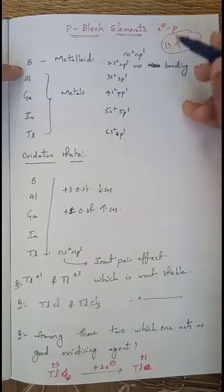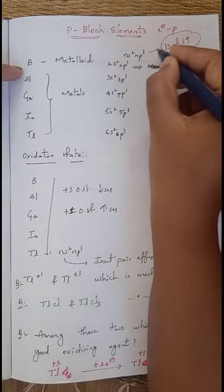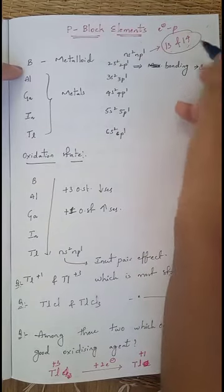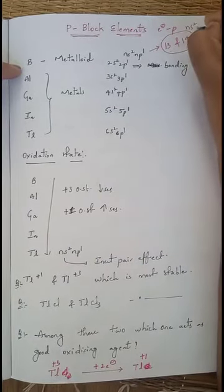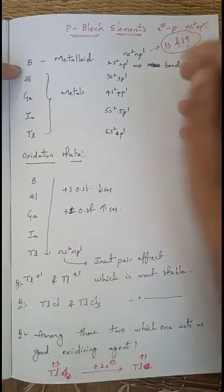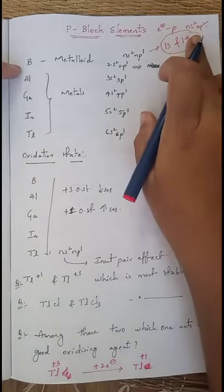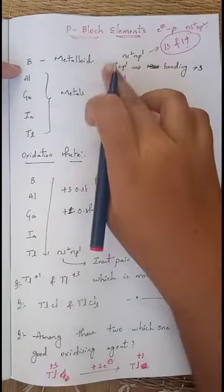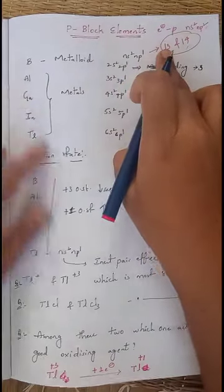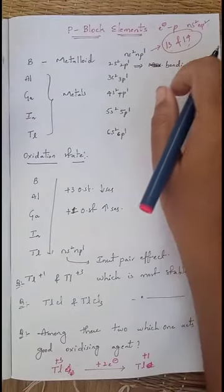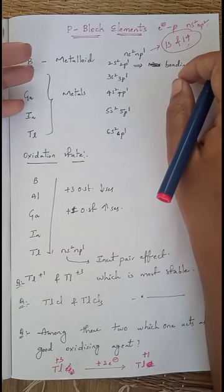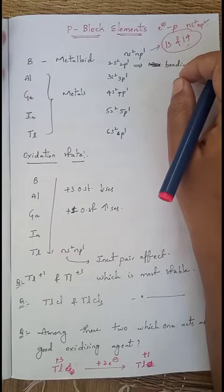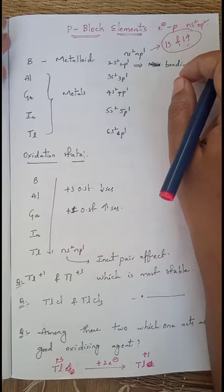In the 13th group, the outermost electronic configuration is ns² np¹. For 14th group elements it is ns² np². That is the outermost configuration for 14th group, and ns² np¹ is the outermost configuration for 13th group elements. Now we will see what elements are present in the group, their general configurations, and their characteristic features.